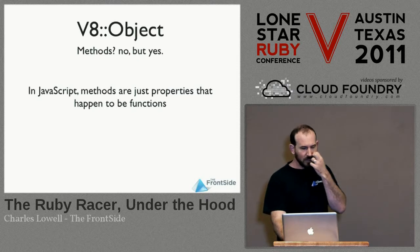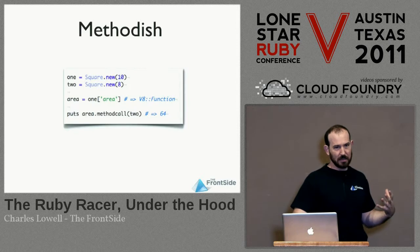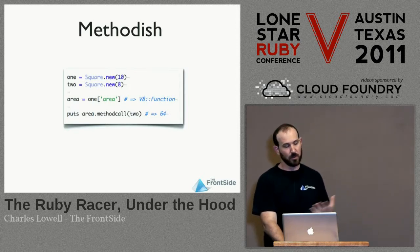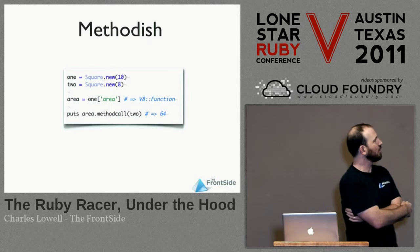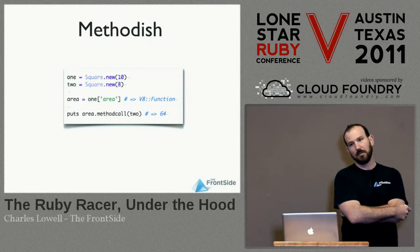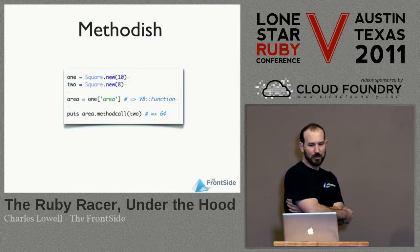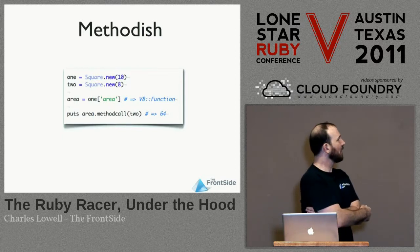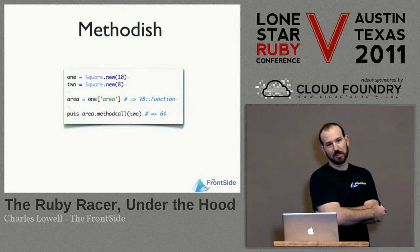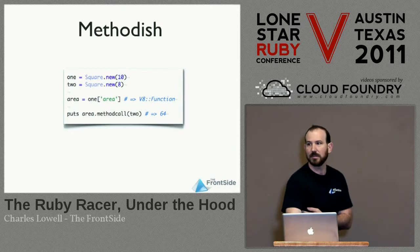You have to remember that JavaScript methods just happen to be functions. One interesting consequence is that you can pick a function property off one object and invoke it on another. Here we've got two squares, we pull the area function off the first square, and we actually invoke it on the second square. That's exactly how you would do it in JavaScript, except you've got Ruby syntax.